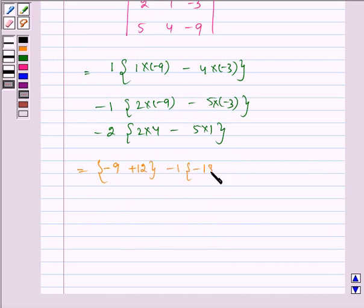Which is equal to 3 minus 1 times -3 minus 2 times 3.